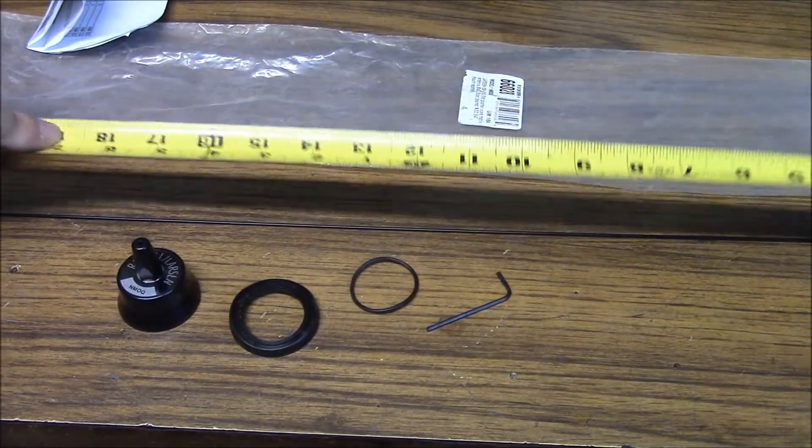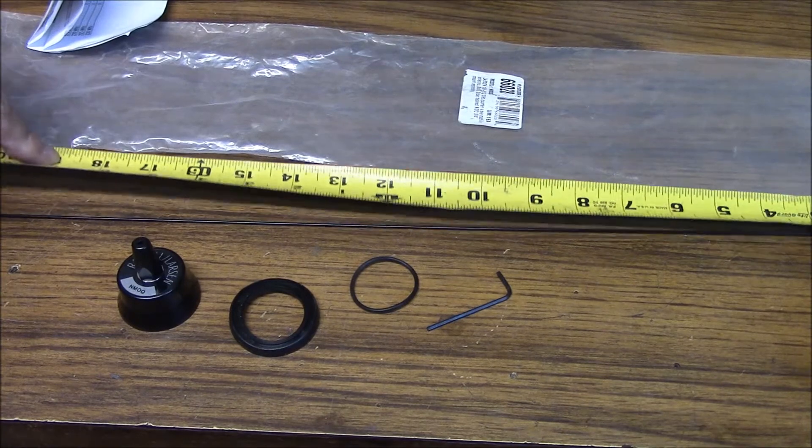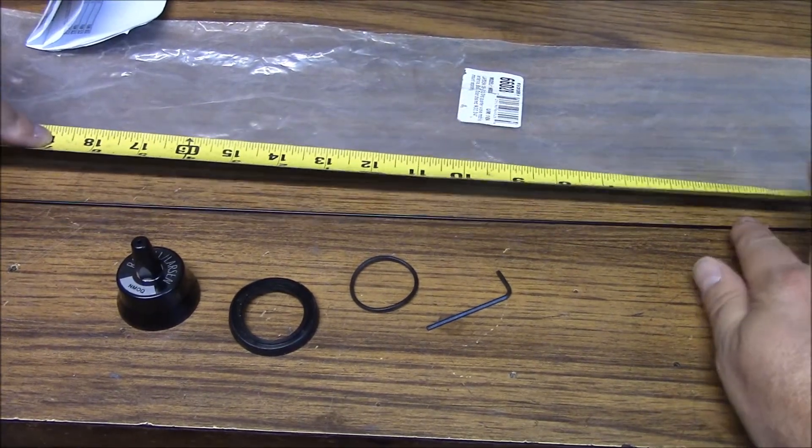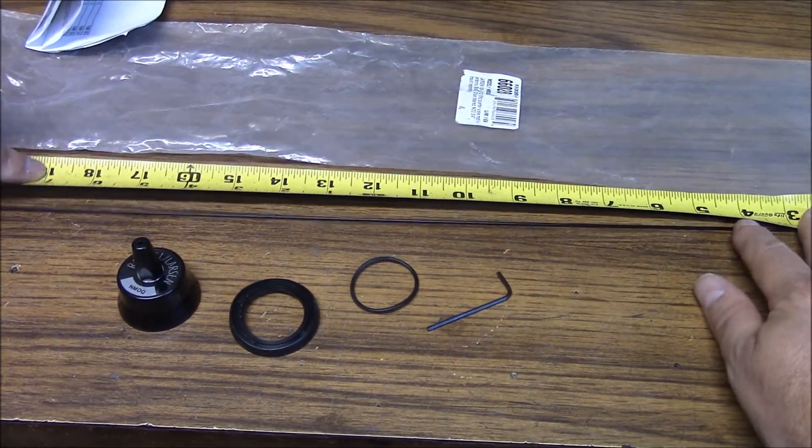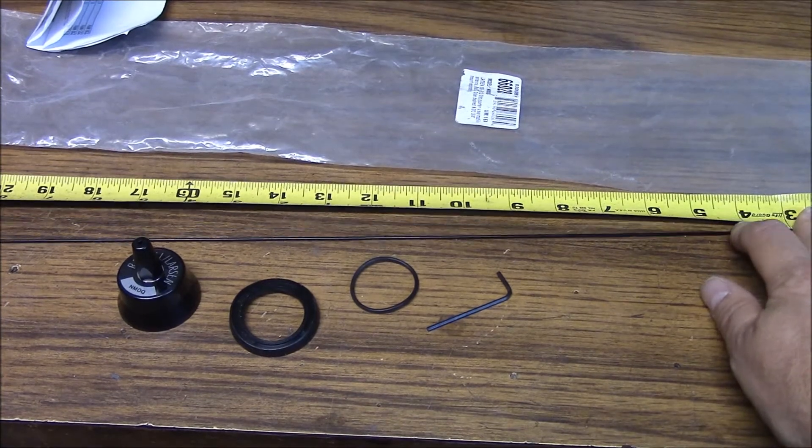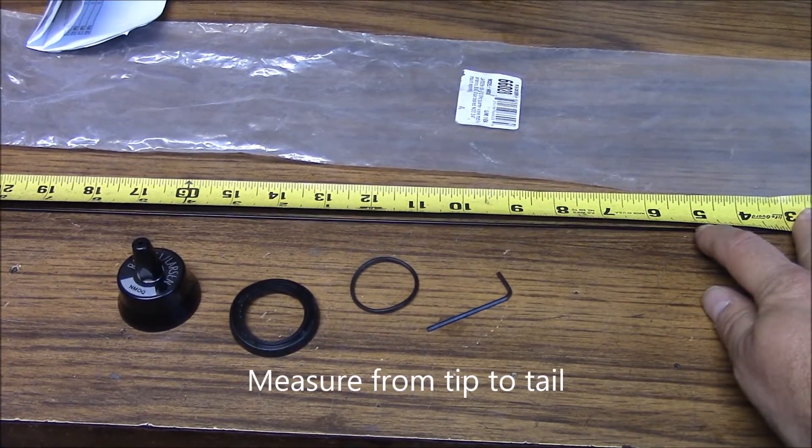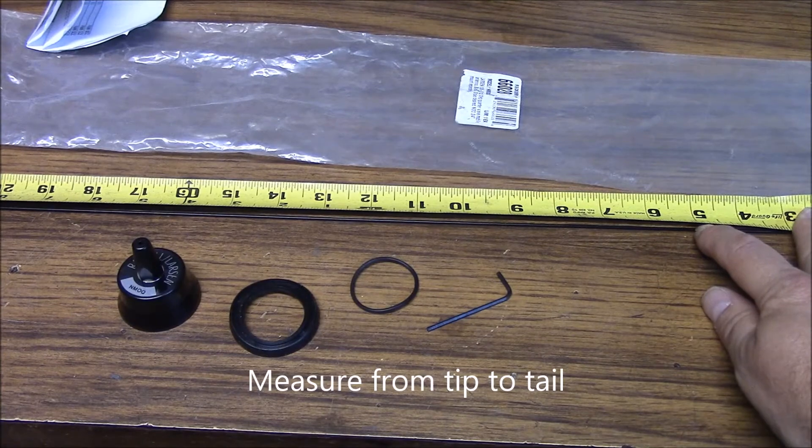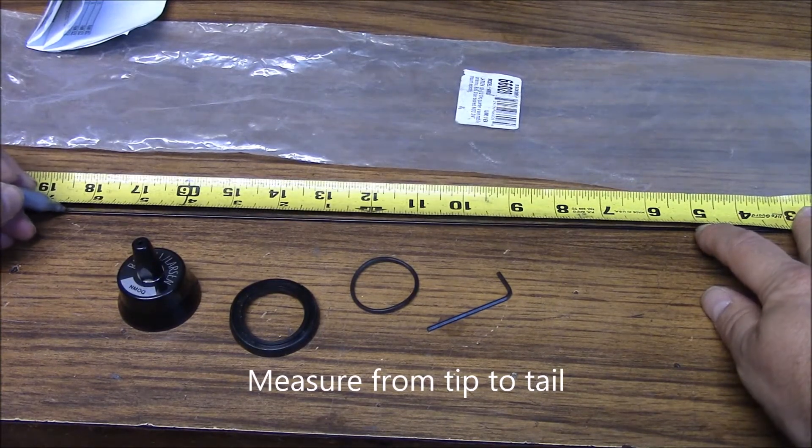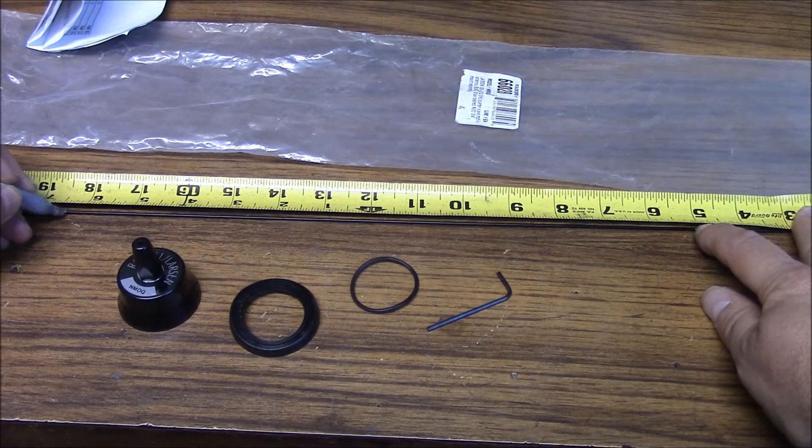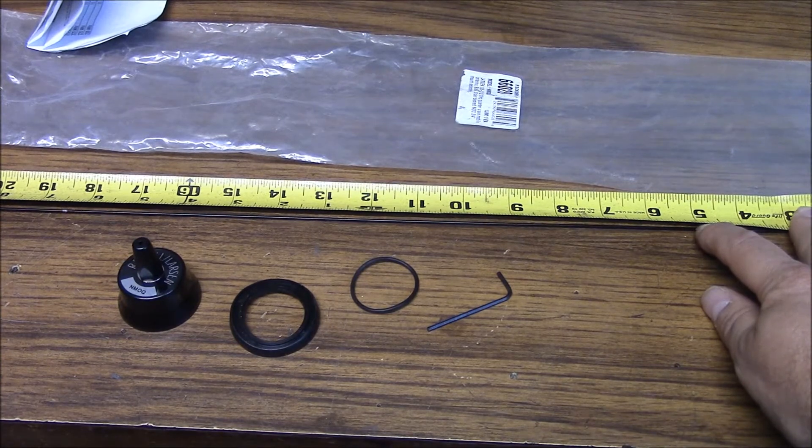Take your tape measure or whatever measuring instrument you have and go at the end of your resonator and measure out your length. In the case of this one here, we want to go 18.5 inches. So I just take a silver sharpie here and mark that for 18.5 inches.